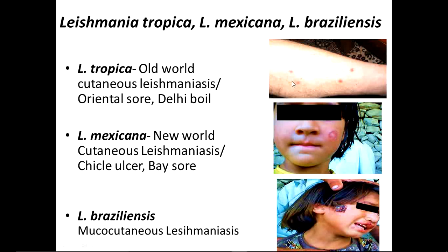In cutaneous leishmaniasis, lesions are confined to skin, while in mucocutaneous leishmaniasis, mucous membranes, cartilage, and skin are all involved, with a granulomatous response and necrotic ulcers that can be superinfected by bacteria. Clinically, cutaneous leishmaniasis initially shows a red papule less than 1 cm in diameter, followed by satellite nodules greater than 1 cm which can ulcerate. Mucocutaneous leishmaniasis produces a papule at the bite site, then metastatic lesions at the mucocutaneous junction of nose and mouth with disfiguring granulomatous ulcers that can destroy nasal cartilage but not adjacent bone.